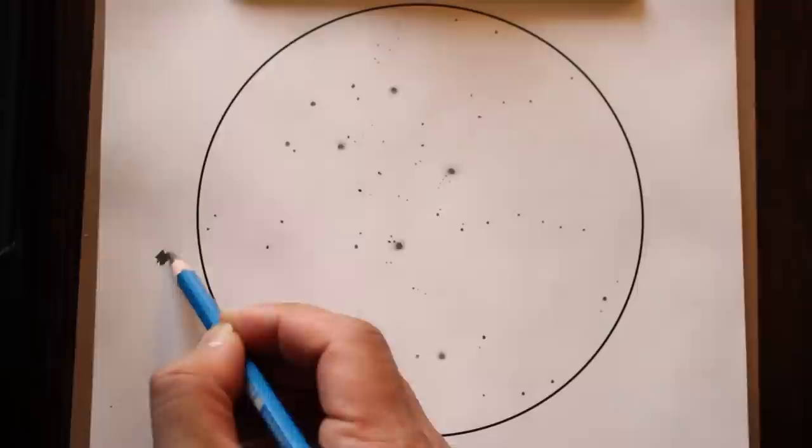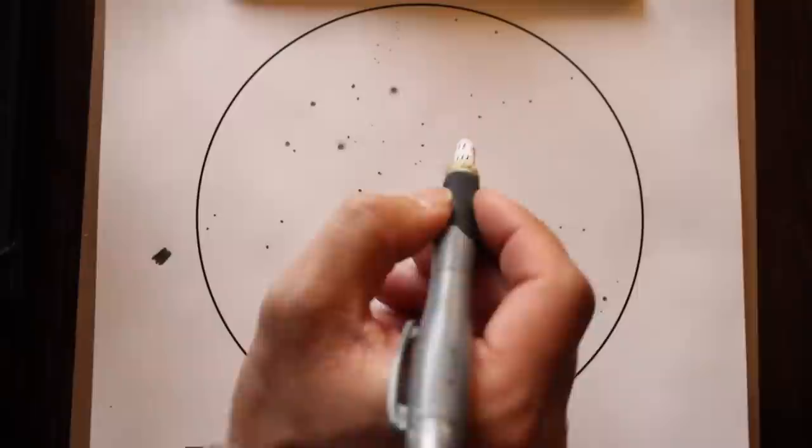You can also sketch some graphite at the corner of your drawing. Rub your smudge tool to pick up some of the graphite and spread it on your sheet.